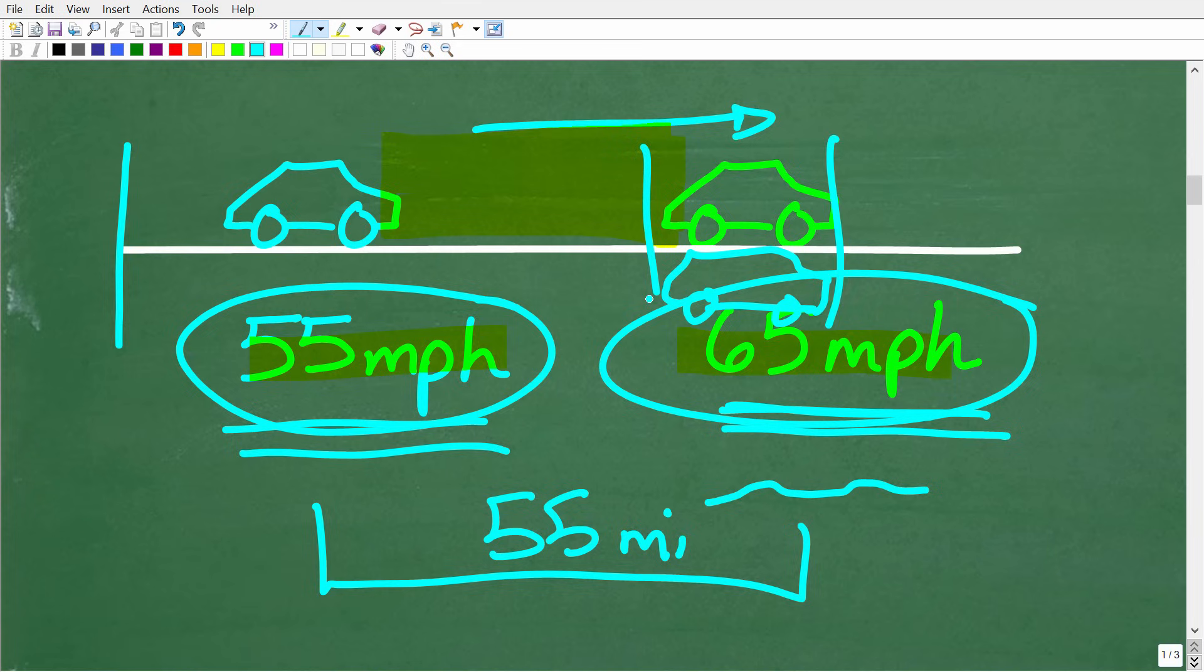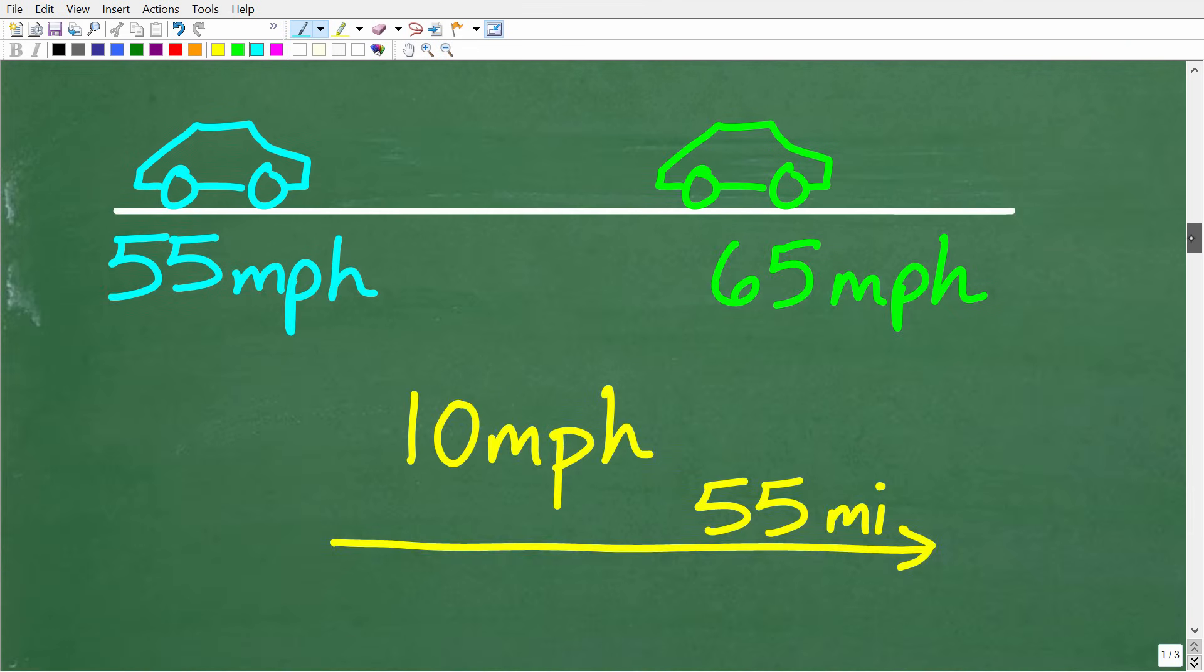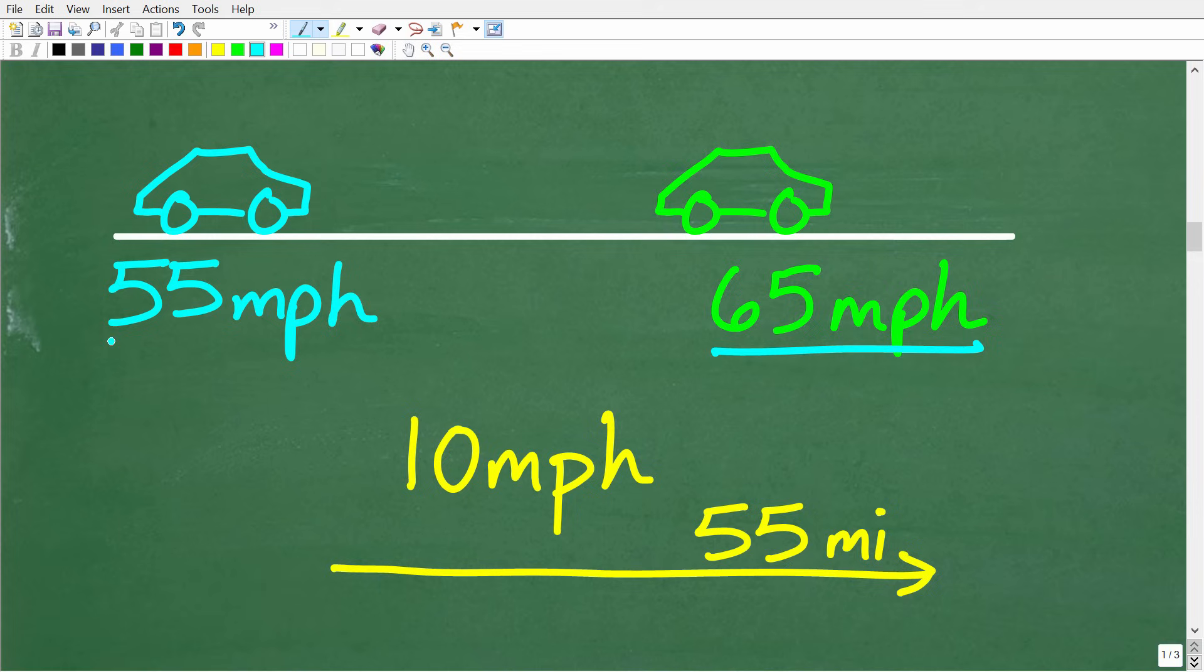There's no relative motion. But here we do have a relative difference in speed, and that is 10 miles per hour. So, effectively, what's going on here is that this faster car is pulling away from the slower car at a speed of 10 miles per hour.